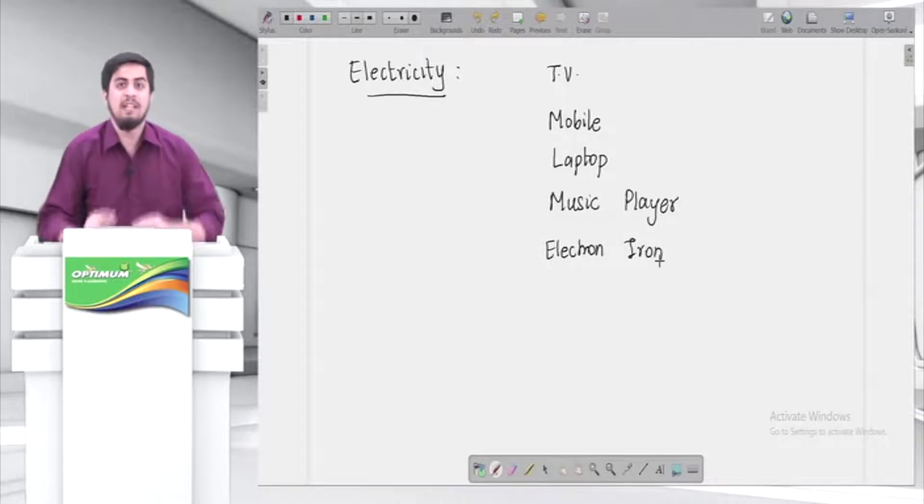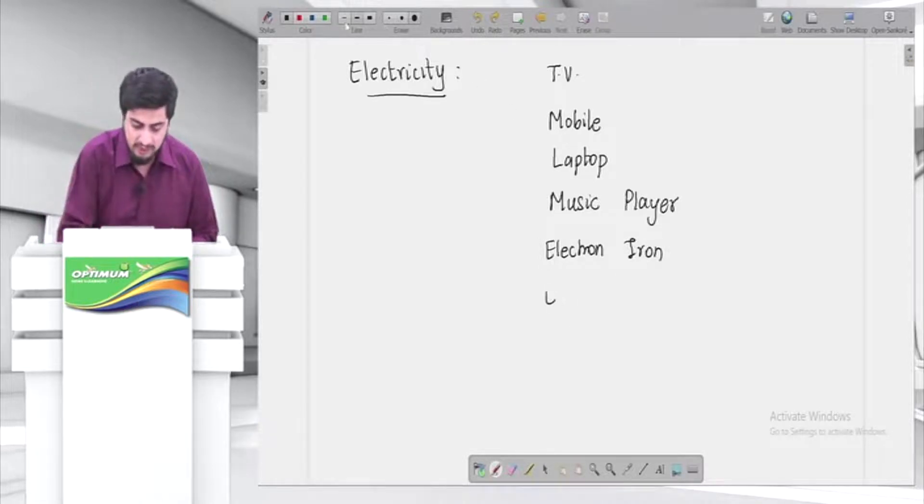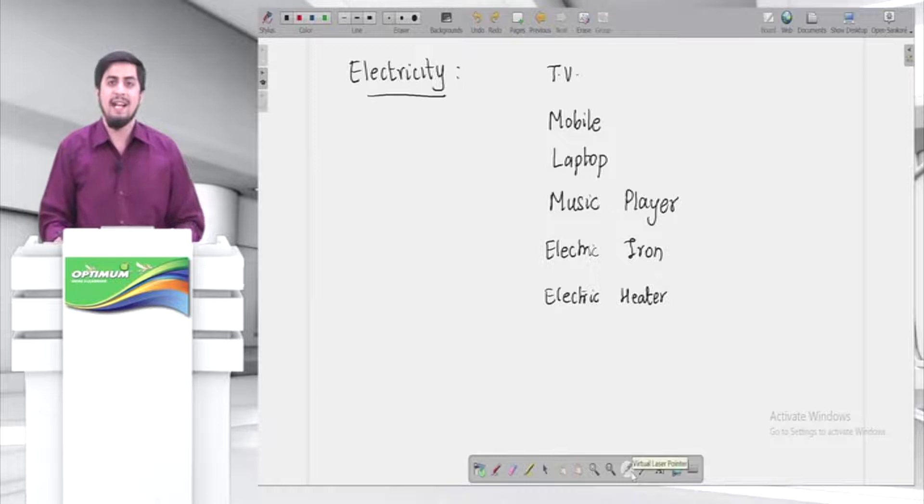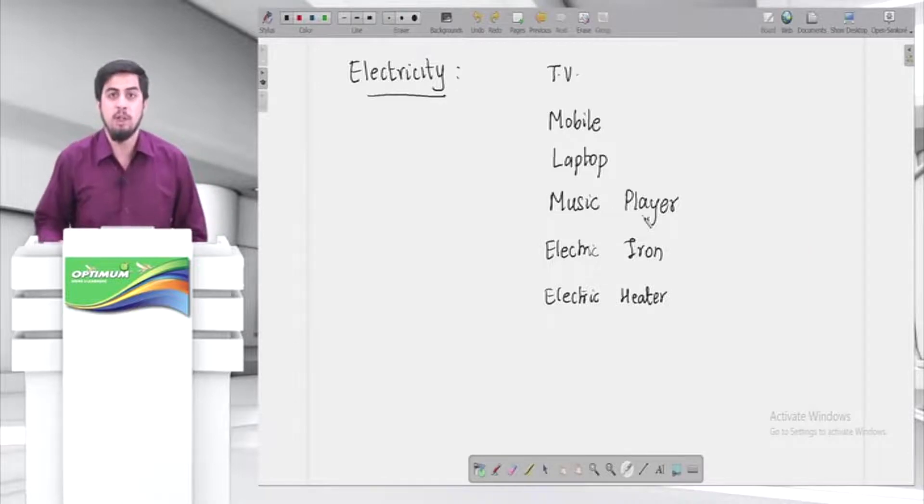If I want to play some music then even the music player requires electricity. Similarly, let us say if I want to iron my clothes, an electric iron will also need electricity. If I want to take bath with hot water, electric heater requires electricity.